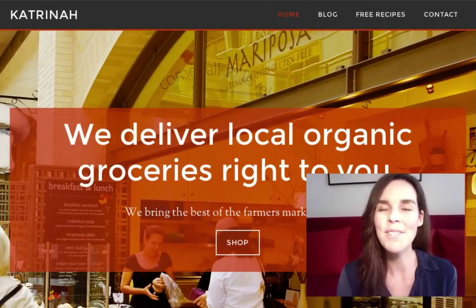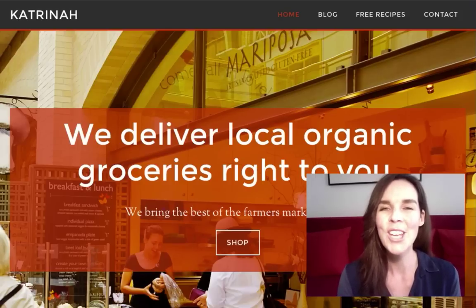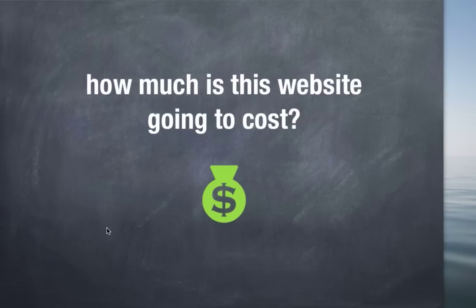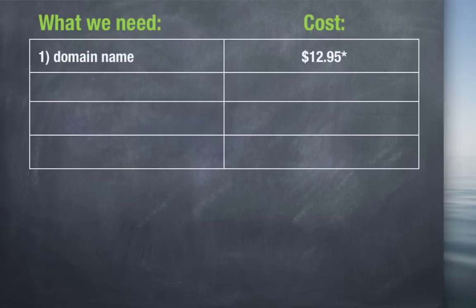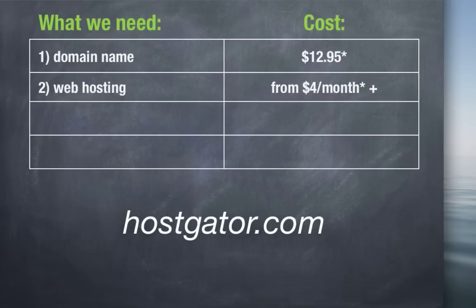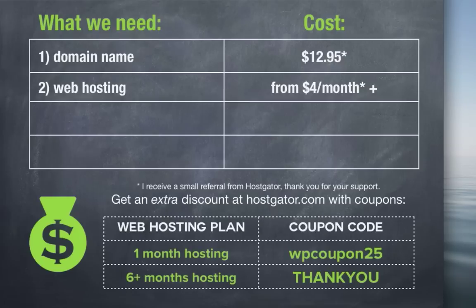So this is where we're headed in this video — we're going to be completely customizing the Parallax Pro Genesis Child theme. Before we get started, how much is this website going to cost? We need a domain name and web hosting. In this video I'm going to be using HostGator.com where you can get both. I'm also going to be using a special coupon code to get an extra amount off the order. There are two coupons to choose from depending on which web hosting plan you prefer.